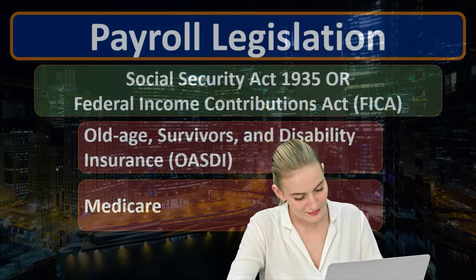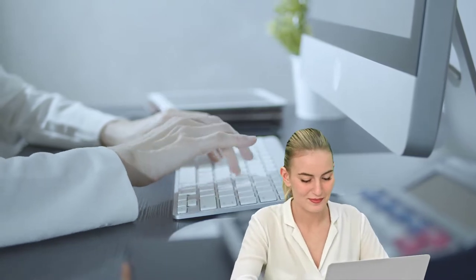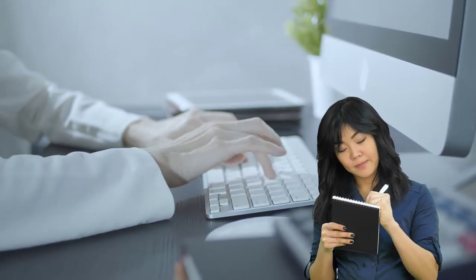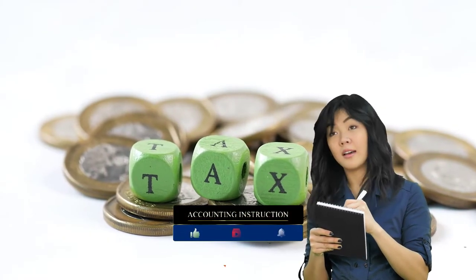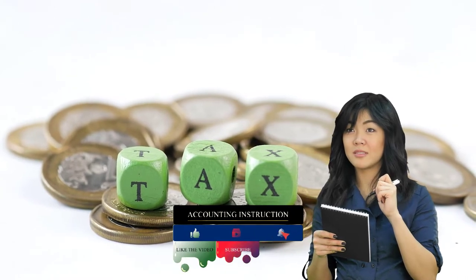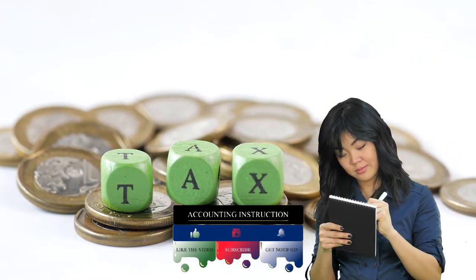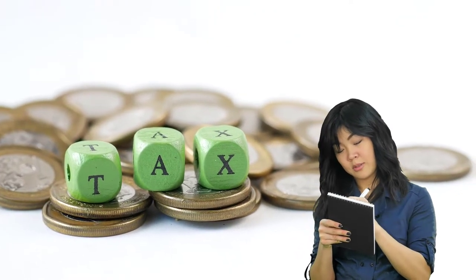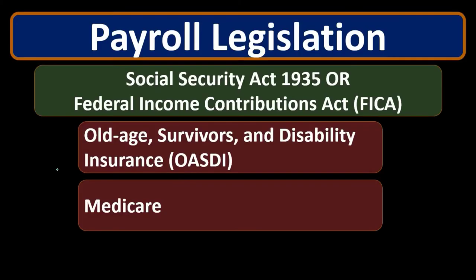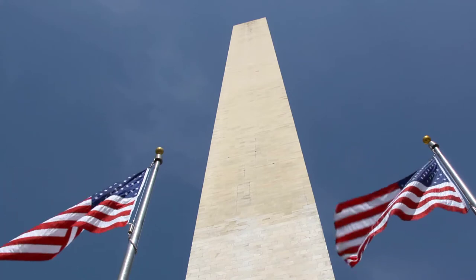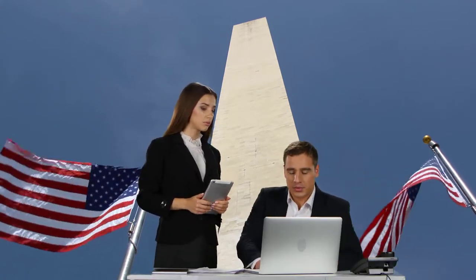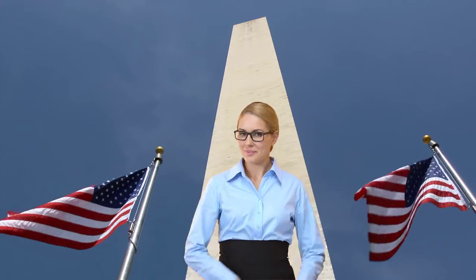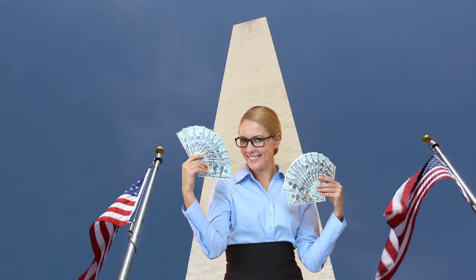From a payroll standpoint, FICA works somewhat like a matching contribution, similar to some 401(k) plans. The employer is forced to contribute part of the taxes based on employee wages, and the employee must also have taxes withheld. So FICA taxes are both employer taxes and employee taxes, and that's where things get confusing when recording journal entries — the employer withholds taxes from the employee and also pays an additional employer portion on top of that.